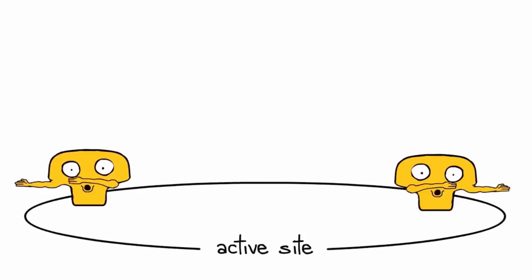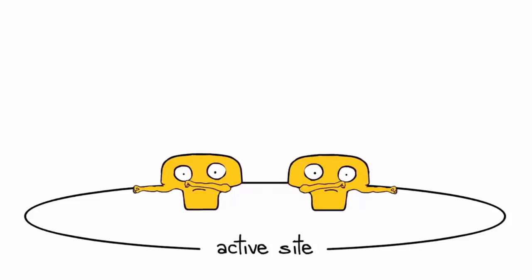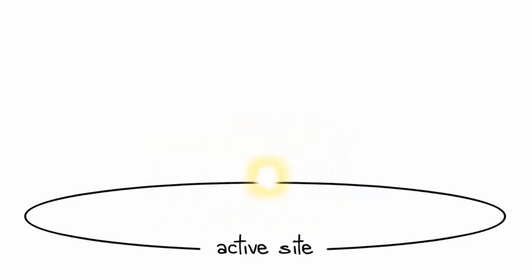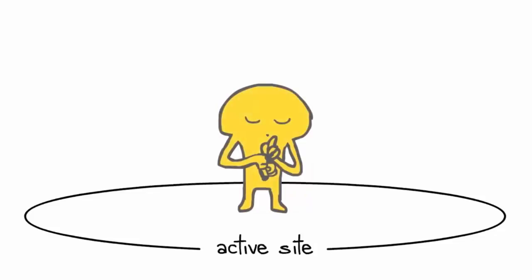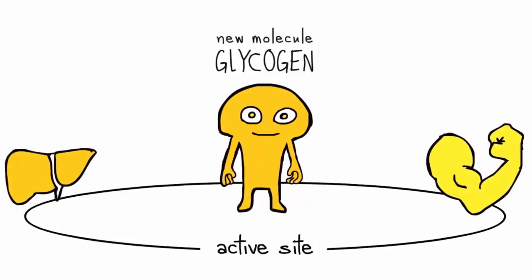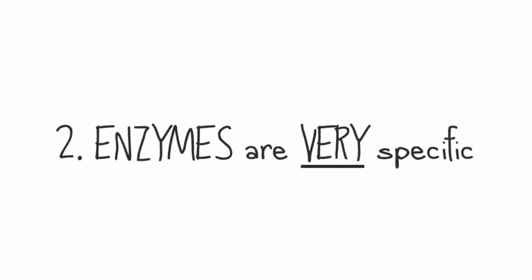Glucose is used up as energy, but when there's too much of it, special enzymes combine the glucose molecules together to form a giant molecule called glycogen, which is then stored away in the liver and muscles for later use.